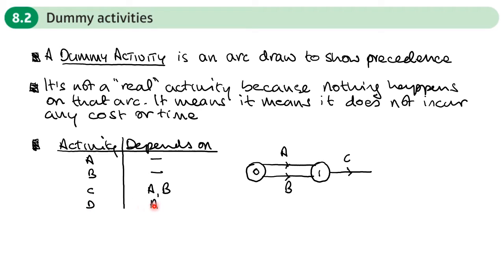Activity D is only dependent on A. Now D has to be joined either to this node or this node or to the end of C. It's not dependent on C so it's not going to go here. If I put it here this says that it's dependent on A and B. So this isn't going to work. I'm going to have to draw this a slightly different way.